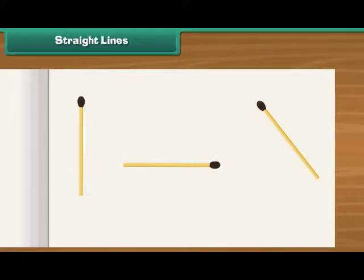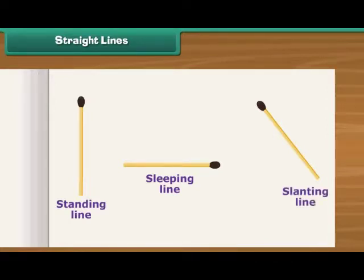Horizontal matchsticks make sleeping lines. Vertical matchsticks make standing lines. Slanting matchsticks make slanting lines.